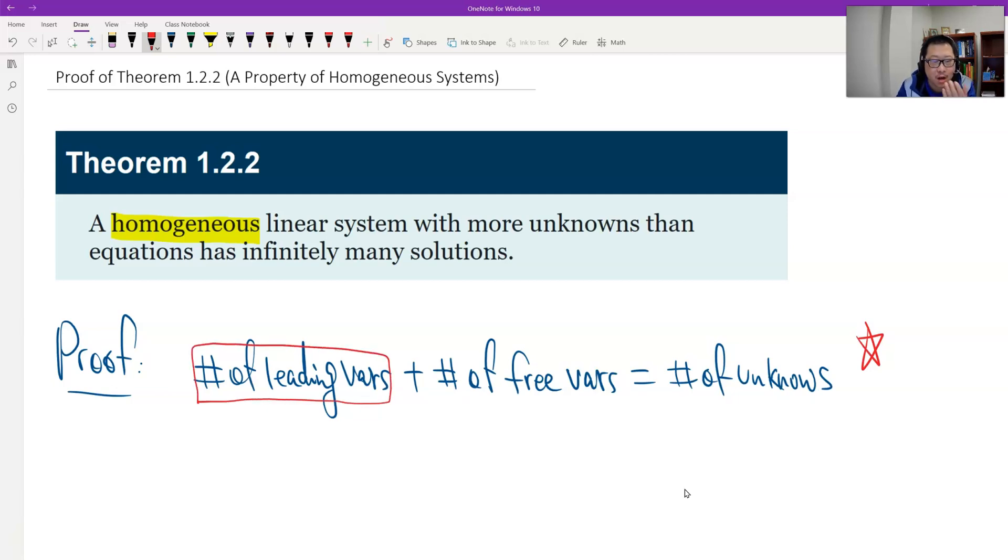The number of leading variables—so how do you define the leading variables? Leading variables start from the reduced row echelon, and then look at the leading ones. This part is just equal to the number of leading ones in the reduced row echelon.